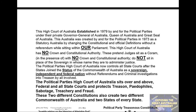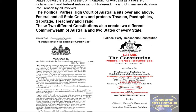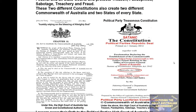These two different constitutions also create two different Commonwealths of Australia and two states of every state. On the left we've got what we're supposed to have, with the Royal Coat of Arms. On the right is the Political Party Treasonous Constitution with their BS Australia Acts, with their Queen of Australia — which again, in the 1998 Constitutional Commission, it states that they need a referendum for the Queen of Australia. When are we going to wake up?